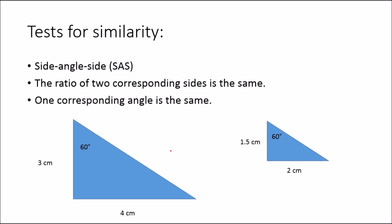Moving on again, the next test is side-angle-side. So two corresponding sides have the same ratios, and one corresponding angle is the same.